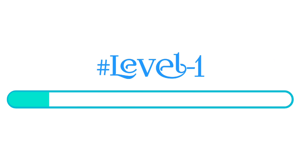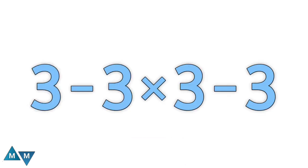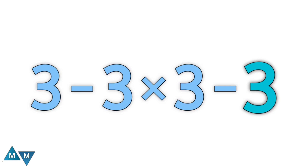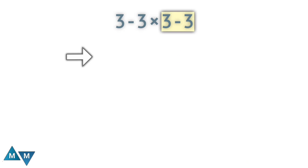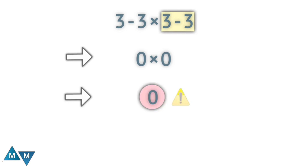So the first problem is: three minus three times three minus three. We've seen a lot of people do it the following way. They say three minus three is zero, and this three minus three also gives zero, so it's going to be zero times zero — and the answer would be zero. Wrong. This is the wrong way to solve it.